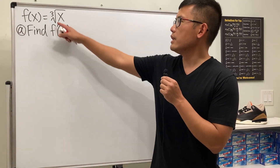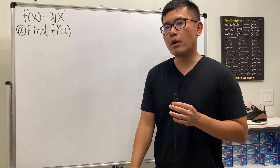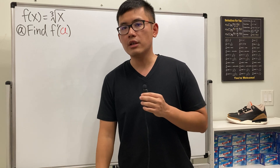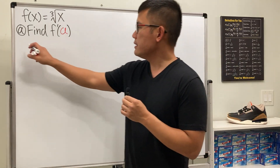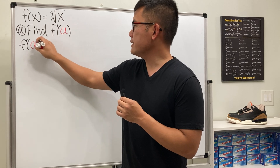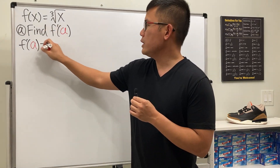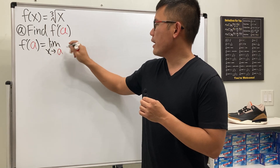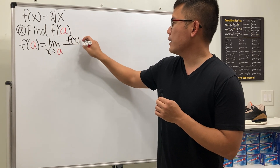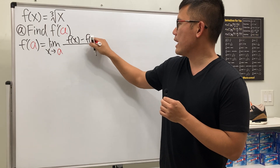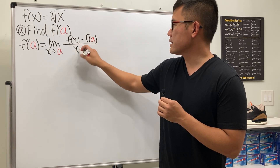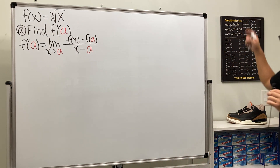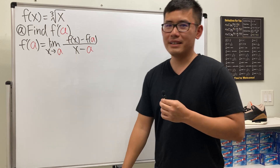We are considering the function the cube root of x, and the first part is to find f prime of a using the definition of the derivative. The formula we are going to use is: f prime of a is equal to the limit as x approaches a of f of x minus f of a, divided by x minus a. Let's go ahead and plug in and work this out.